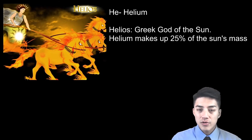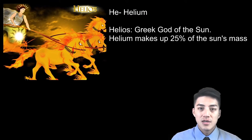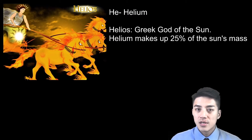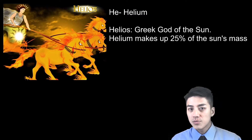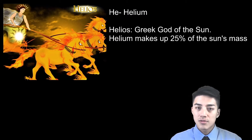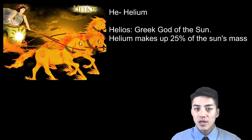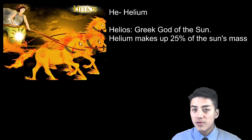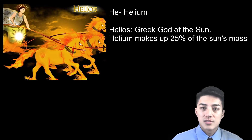Helium was named in honor of the Greek god of the sun, Helios. It was thought that Helios drove a magic chariot drawn by fire horses, and he was responsible for allowing the sun to rise and set by pulling the sun with him in his magic chariot. Helium also, by the way, makes up 25% of the sun's mass.